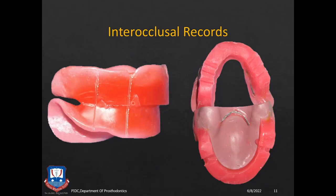Some operators also prefer to make notches and grooves on the occlusal surface of the opposing rims, and these grooves are then filled with either softened wax, greenstick compound, or a plaster index is also made.